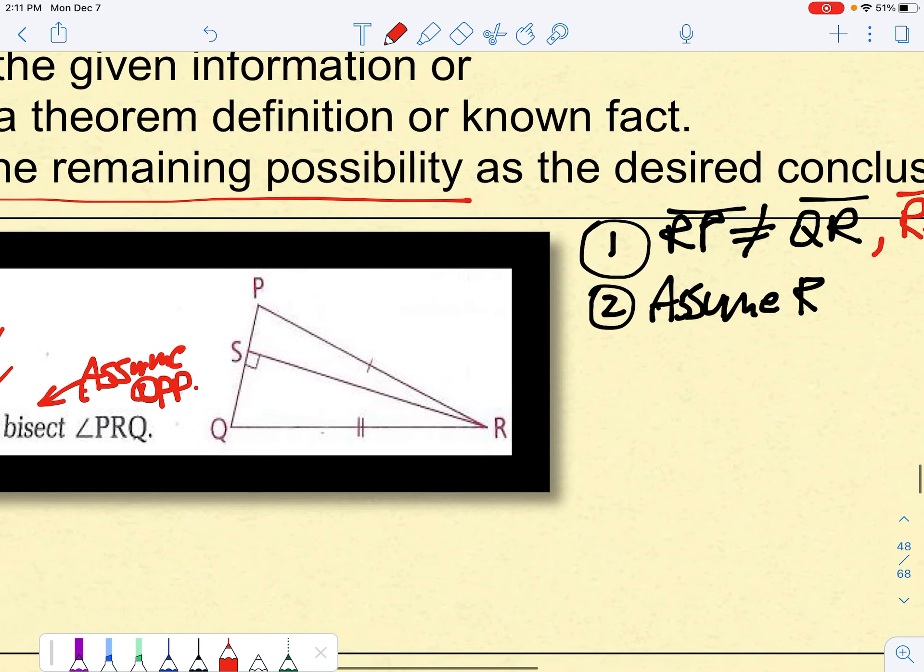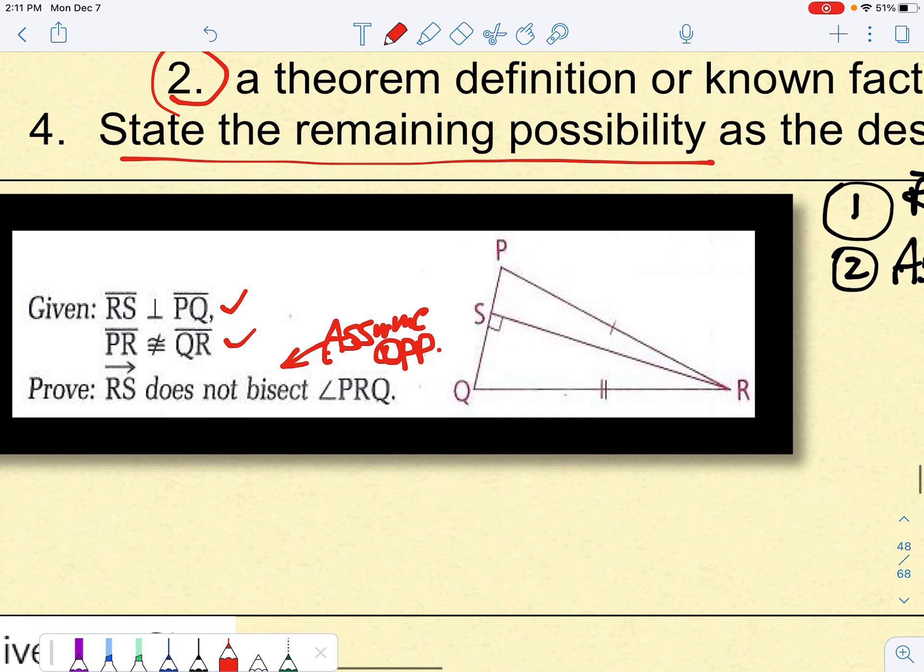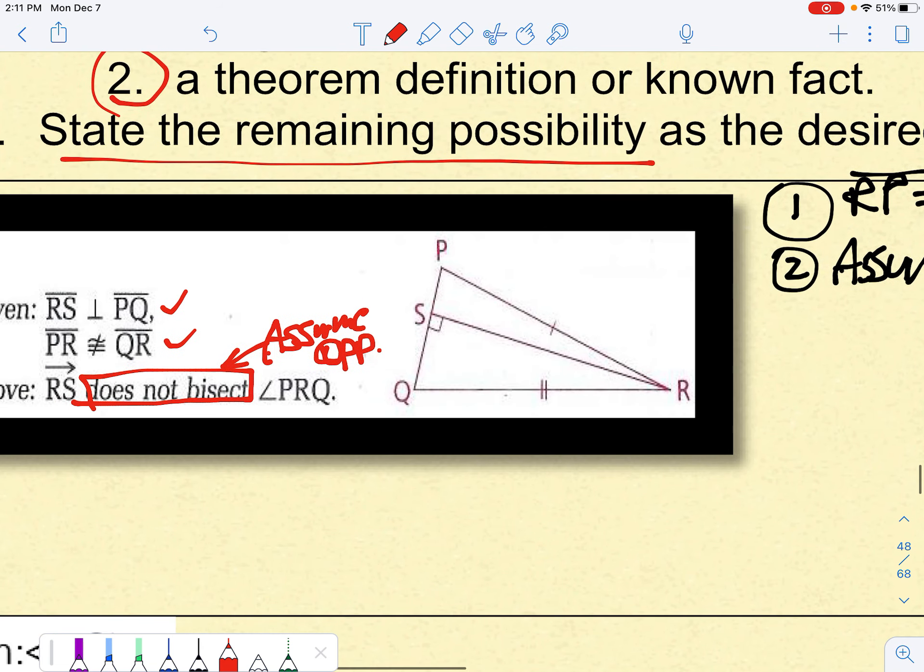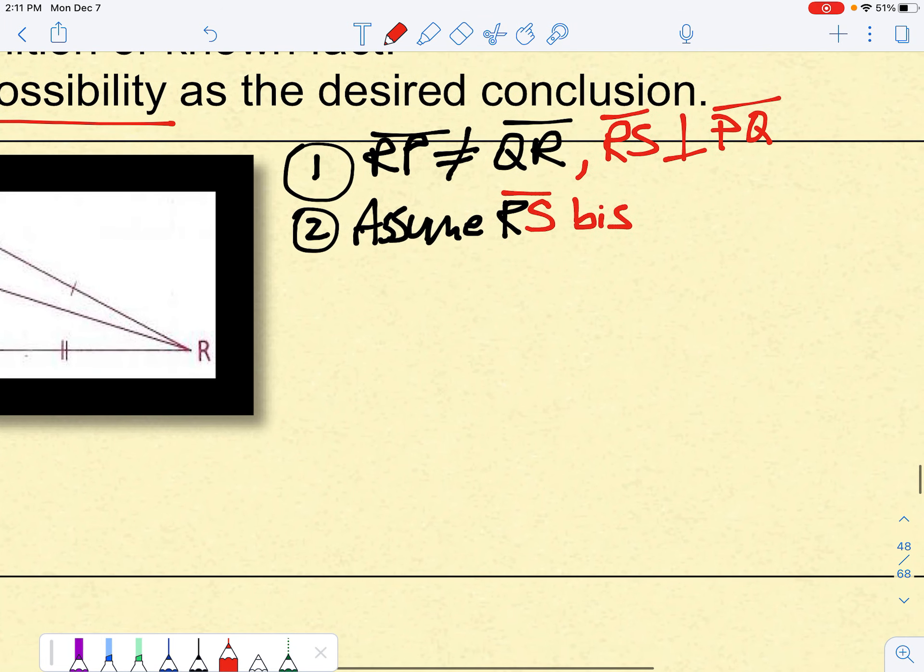Okay? Then right out of the blocks, we say, okay, they told us it does not bisect. So I'm going to say that RS bisects angle R, angle PRQ.